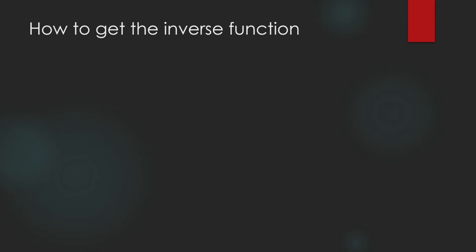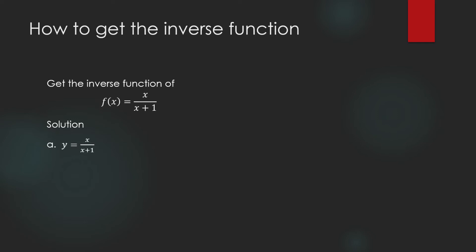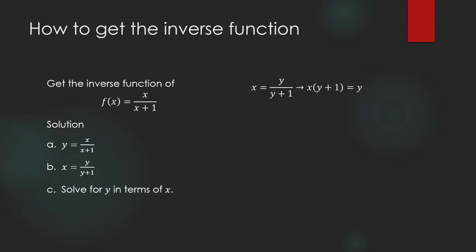How to get the inverse function given a one-to-one function. For example, take f(x) = x/(x+1), which we saw is one-to-one and therefore has an inverse. First, we write it as y = x/(x+1), replacing f(x) by y. Then we interchange the variables, replacing x with y and y with x, giving us x = y/(y+1). Next, we solve for y in terms of x.